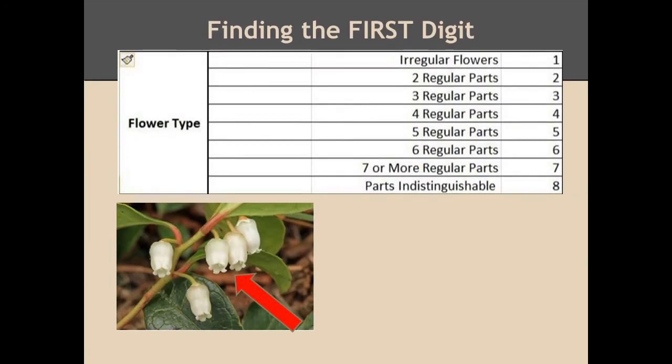Remember this flower from the first video? The petals are united, kind of like a bell-shaped flower. The lobes on the flower are the same size, shape, and color. Would you consider this a regular or irregular flower? You were correct if you said regular. How many lobes do you count on one flower? Did you get five parts? Five regular parts equals the five in the far right column of the chart — this is your first digit.